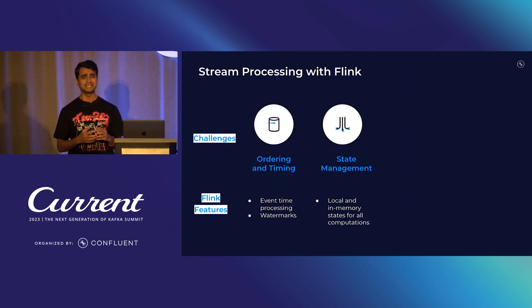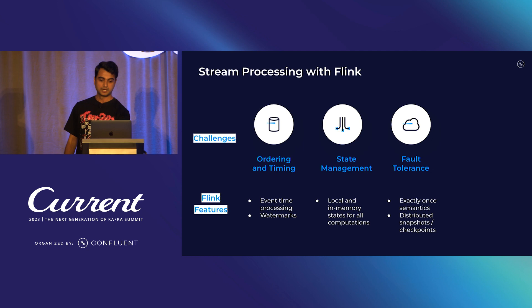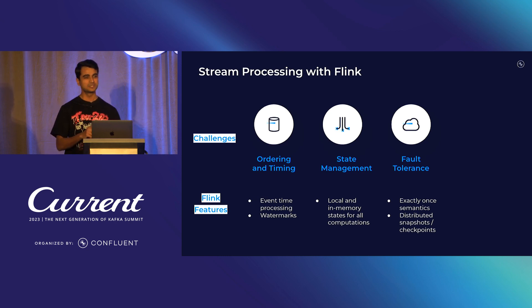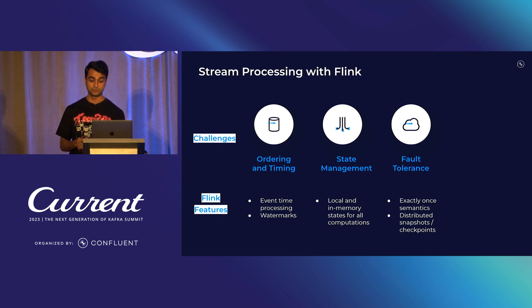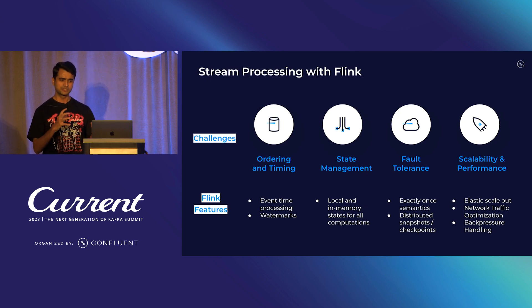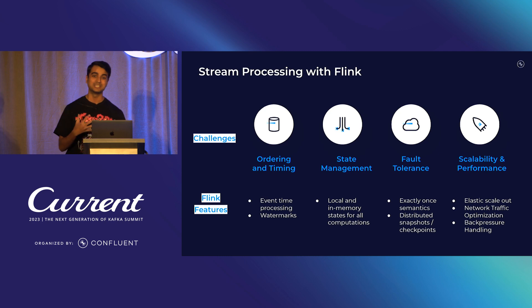The second is state management: Flink maintains a local state with the task manager for all state computations. If the state is large, you put it on RocksDB, but this allows low-latency computations. Fault tolerance: Flink provides exactly-once semantics through consumer replay, distributed snapshots, regular checkpointing, and a two-phase commit on the consumer end. For scalability and performance, Flink has elastic scale-out, network traffic optimizations including operator chaining and buffers between operators, and built-in back pressure handling.